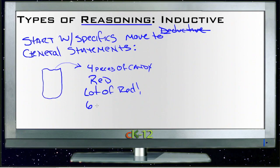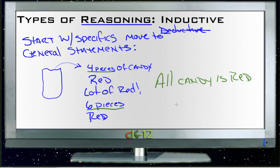And if you reach in and pull out another six pieces of candy and they're all red, then you might start to wonder if all of the candy in the bag is red. So in that example, what you've done is go from the specific case of four pieces of candy and six pieces of candy that you pulled out one after another to the general statement that all the candy is red. That's an example of inductive reasoning.